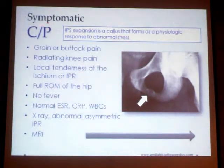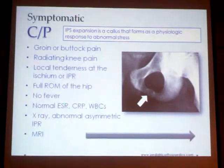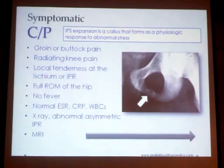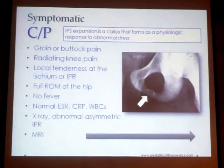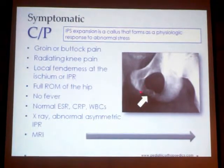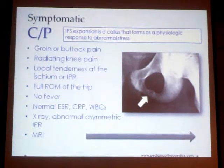Symptomatic cases present with groin or buttock pain radiating to the knee, local tenderness at the ischium or ischiopubic ramus, and full range of movement of the hip with no limitation whatsoever and no fever. The ESR, CRP, and inflammatory markers are almost normal. The x-ray shows asymmetry, but this asymmetry must be correlated with symptoms.